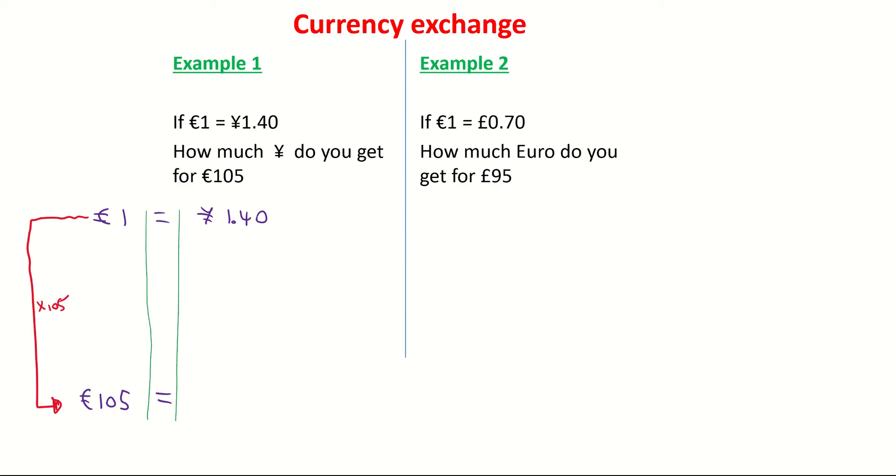So on the left-hand side, I'm timesing 1 by 105 to get to 105. If you think of your algebra, you have to do the same thing on the right-hand side. You have to keep it balanced here, basically.